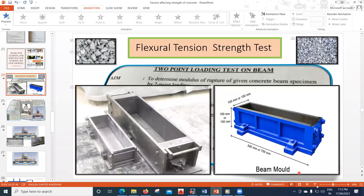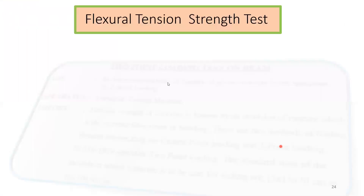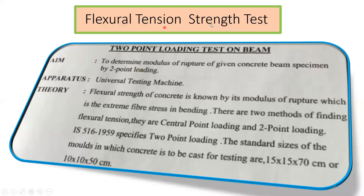To begin with the theory part: this flexural tension test is called a two-point loading test on the beam, since we apply load at two points. The aim is to determine the modulus of rupture of a given concrete beam specimen by two-point loading. Modulus of rupture refers to breaking — since we are breaking the beam by applying force, the resulting tension is called rupture. The apparatus required is a universal testing machine.